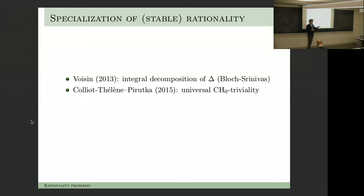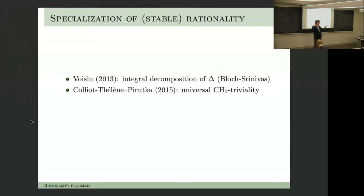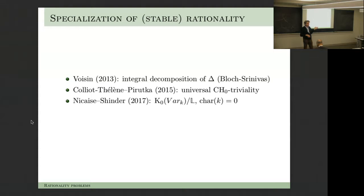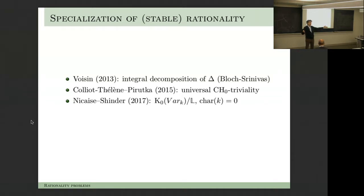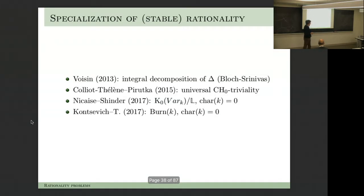They introduced the notion of universal triviality, which they also showed specializes well. It's kind of an analog of rational connectedness: it means you can connect points by rational curves. Universal means you do it over every field extension of the ground field. But then it turns out that you don't need these zero cycles at all—you can show directly that stable rationality specializes in mildly singular families. That was the work of 2017. Maxime was visiting New York and we met on the first day for lunch. I said, this paper just appeared on the archive. That afternoon, we proved the theorem that, in fact, rationality specializes—not just stable rationality.